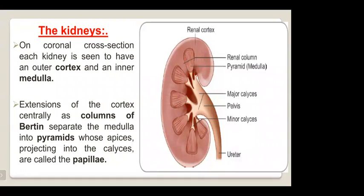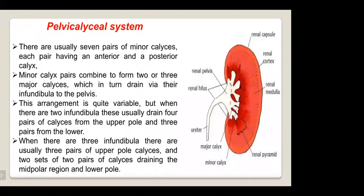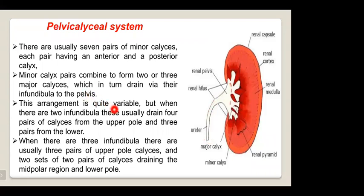The pelvicalyceal system has usually seven pairs of minor calyces, each pair having an anterior and posterior calyx. The minor calyx pairs combine to form two or three major calyces, which in turn drain via their infundibula to the pelvis. When there are two infundibula, these usually drain four pairs of calyces from the upper pole and three pairs from the lower. When there are three infundibula, there are usually three pairs of upper pole calyces and two sets of two pairs draining the mid and lower regions.